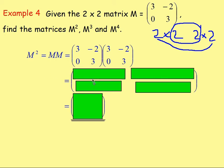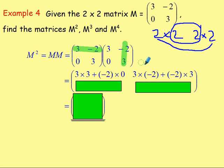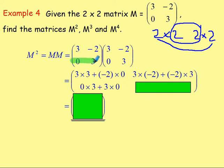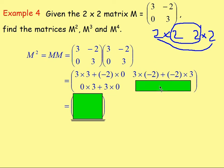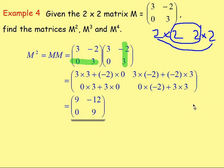So M squared is M times M: [3, -2; 0, 3] multiplied by itself. The result is a 2 by 2 matrix. First row, first column: 3 times 3, add (-2) times 0. First row, second column: 3 times (-2), add (-2) times 3. Second row, first column: 0 times 3, add 3 times 0. Second row, second column: 0 times (-2), add 3 times 3. Working that out gives M squared = [9, -12; 0, 9].